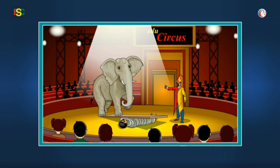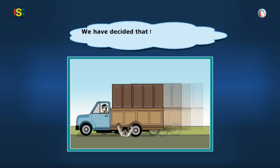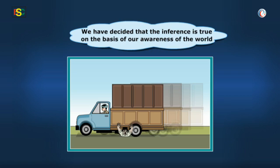Now we have decided that the inference is true on the basis of our awareness of the world. We know that a man who is run over by a truck will survive only if he is lucky in a very big way.